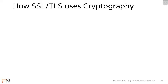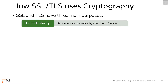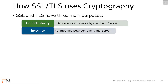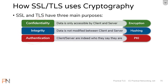It all started when we discussed that SSL and TLS have three main purposes. The first is to provide confidentiality, which means the data is only accessible by the client and the server. The second is to provide integrity, which ensures that data cannot be modified between the client and the server. And finally, to provide authentication, which means we know indeed who we are speaking to. These three services are provided by different cryptographic tools: confidentiality via encryption, integrity via hashing, and authentication via the PKI.